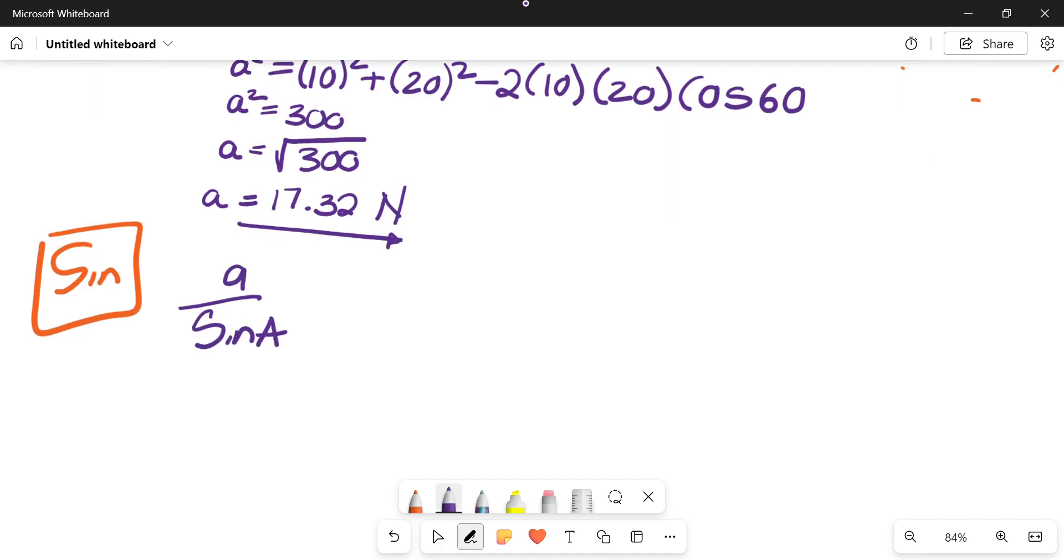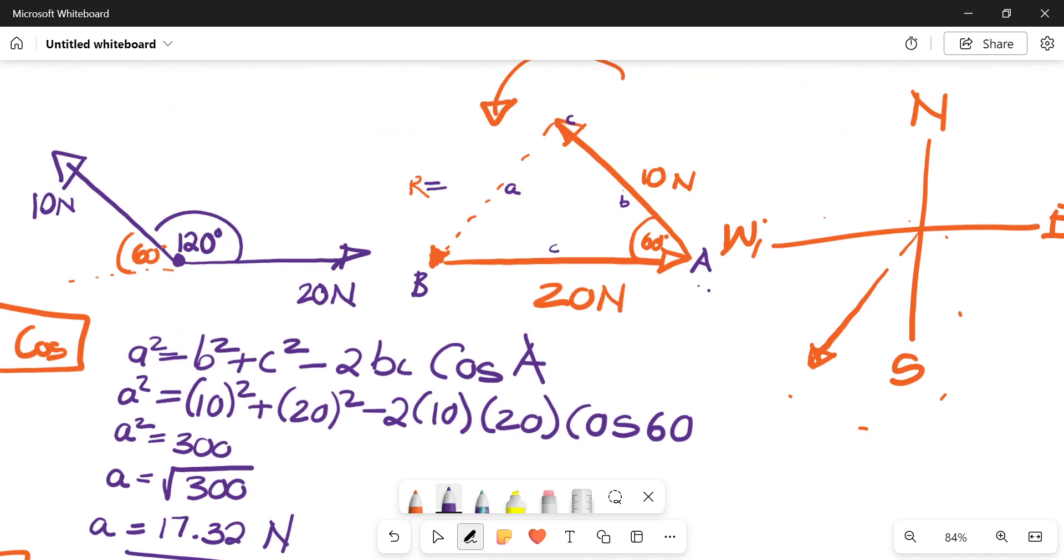Then you would remember our sine rule says a over sine of A is equals to b over sine of B is equals to c over sine of C. Then we look at what we have and what we're trying to get.